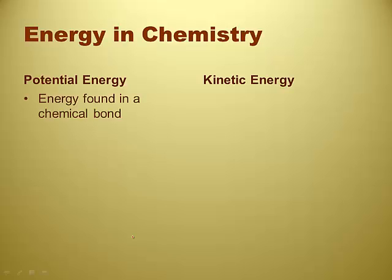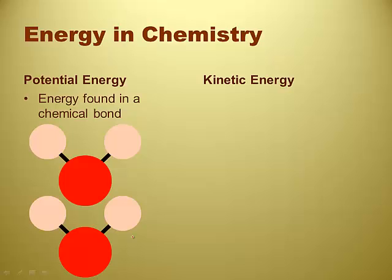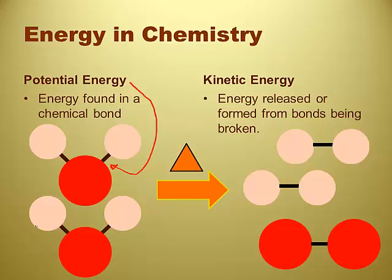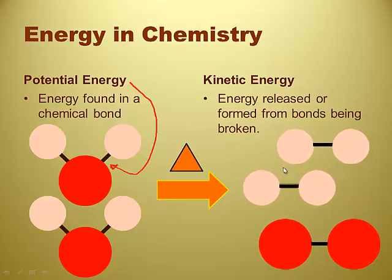Potential energy in chemistry is a little different — bond energy. The energy found in a chemical bond is potential energy. We've got a chemical bond here between the oxygen and the hydrogen, and that's where the potential energy is. If you're going to do a chemical reaction — say, decomposition of water — you break those bonds between the hydrogen and oxygen, the atoms rearrange, and they form new bonds. We've got three new bonds formed from four, so we've got a little bit of extra energy.